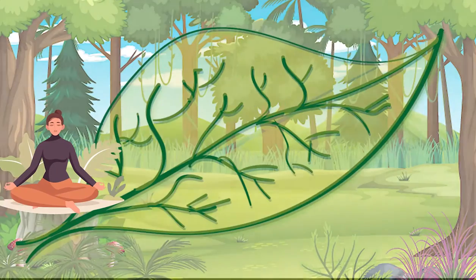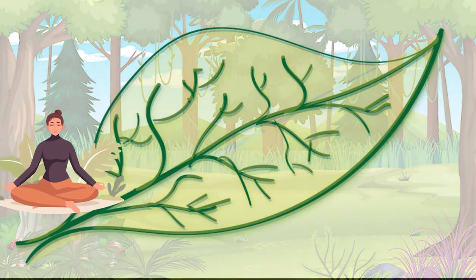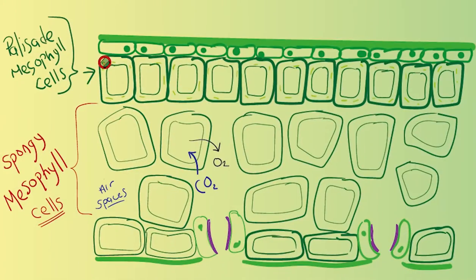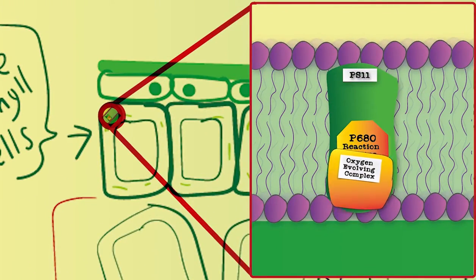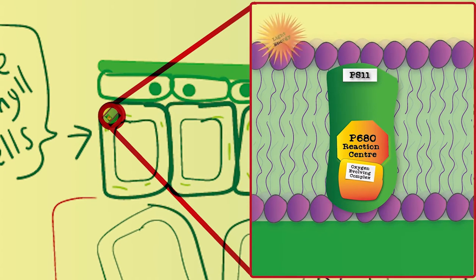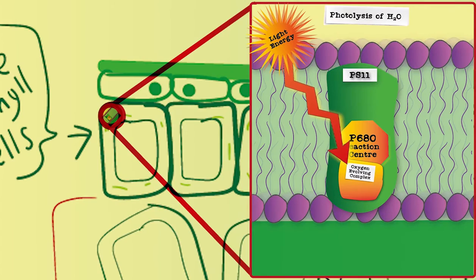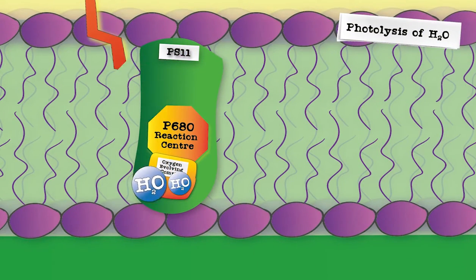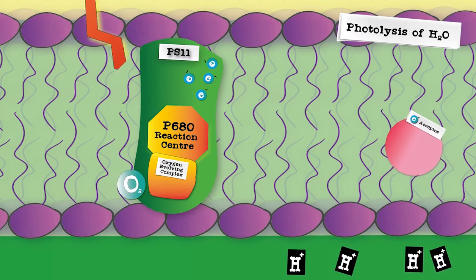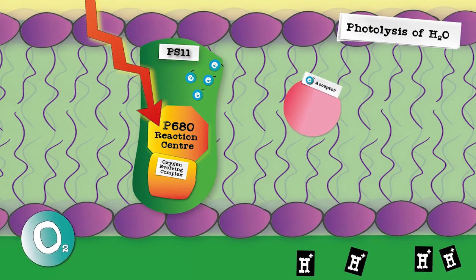Chlorophyll in Photosystem II is able to replace its lost electrons via a complex of proteins known as the Oxygen Evolving Complex. It is this complex of proteins that is responsible for the photolysis of water, resulting in the production of hydrogen ions, electrons, and oxygen.